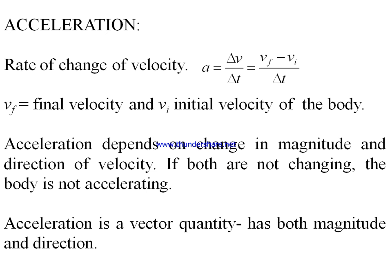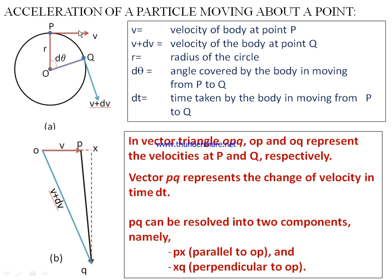Acceleration depends on change in magnitude and direction of velocity. If both of these are not changing, then the body is not accelerating — it is moving with uniform velocity. Acceleration is a vector quantity, meaning it has both magnitude and direction. Now let us try to understand more about the acceleration of a particle.